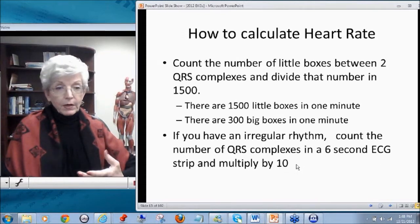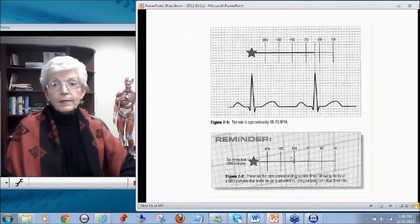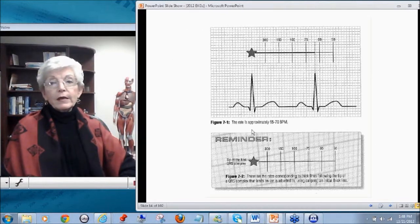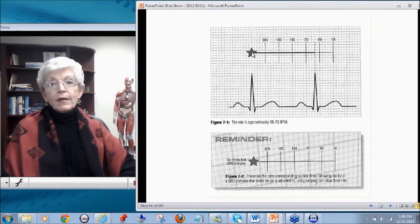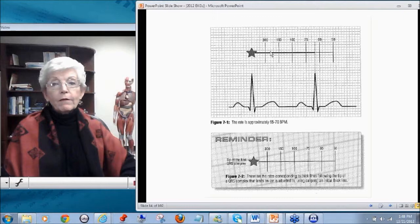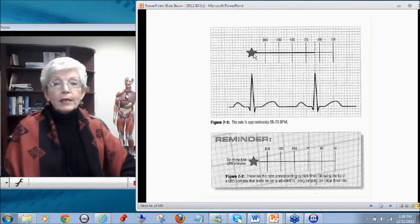So here is one method of looking at how to calculate heart rate. That if, in fact, you had a beat occur one every big box, if it occurred every one box, you'd have a rate of 300. If you had a QRS that occurred every two big boxes, you'd have a rate of 150. If it was every three big boxes, it would be a rate of 100. Every four, 75. Every five would be 60.